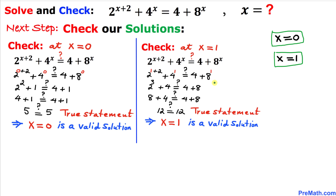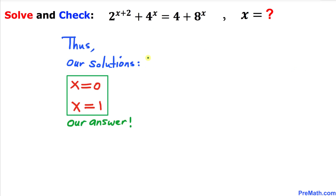Let's recap. Our solutions were x equals 0 and x equals 1. Once we checked our solutions step by step, both x equals 0 and x equals 1 are valid solutions. So our complete solution set is x equals 0 and x equals 1 — and that's our final answer. Thanks for watching and please don't forget to subscribe to my channel for more exciting videos.